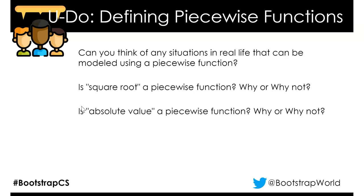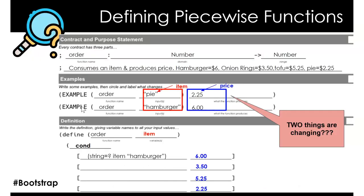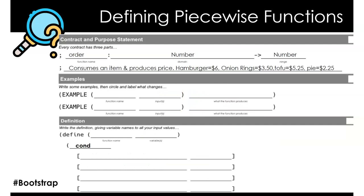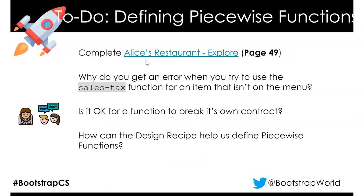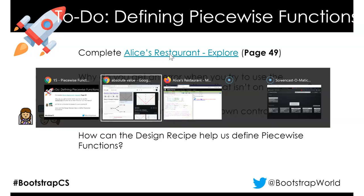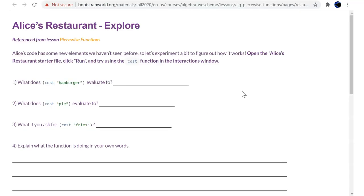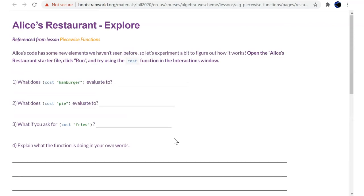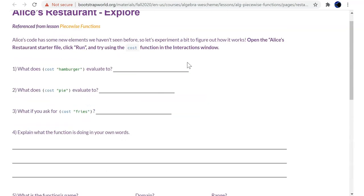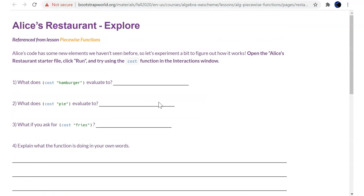And that's our last slide. So don't forget, your assignment to do right now, or to do before the next time, is to do the Alice's Restaurant Explorer, which I have in here is page 49. It may or may not be if you printed it out. But Alice's Restaurant Explorer is going to use that Alice's Restaurant WeScheme that we remixed and loaded and saved into our section. Thanks.